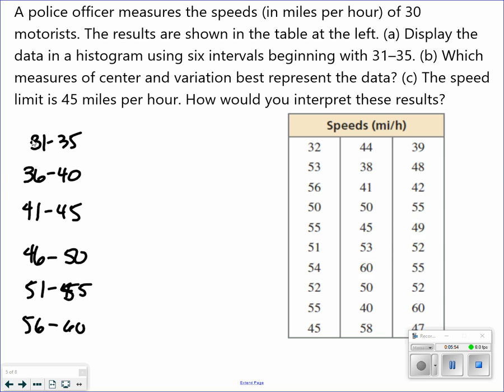Now, you're going to have to basically go through each number here and place it in one of the intervals. For instance, 32 goes in the first interval. 53. And all you're doing is tallying each one. So 32, 53, 56, 50. And this is going to take you some time, especially with the large data set that I have here. So 51, 54, 52, 55. And then 45.